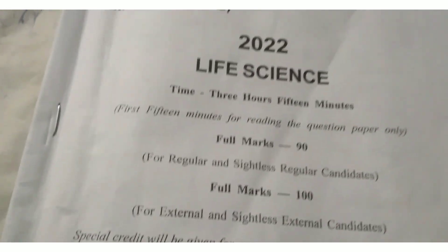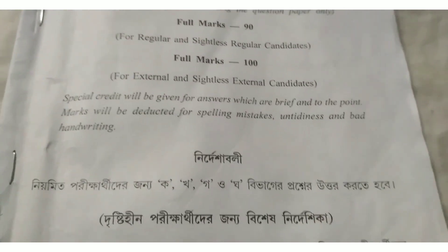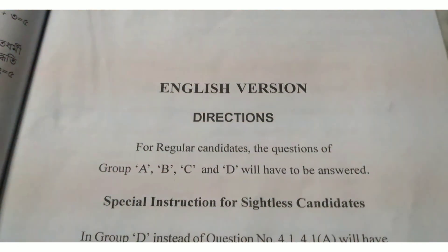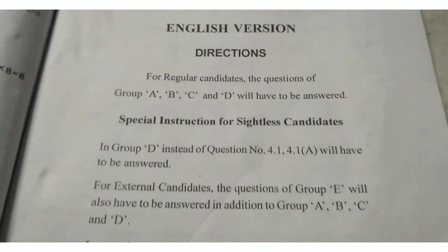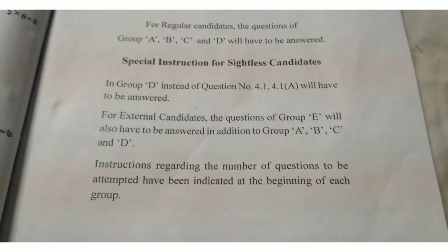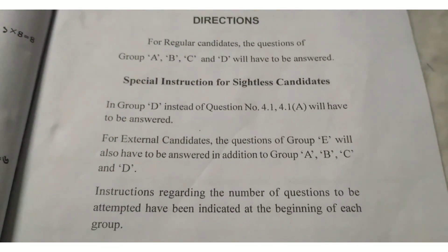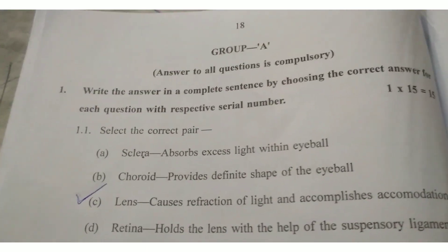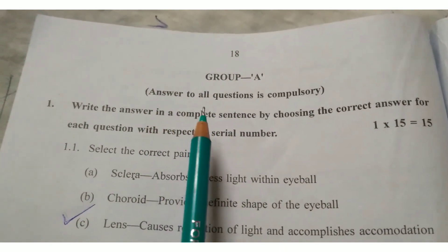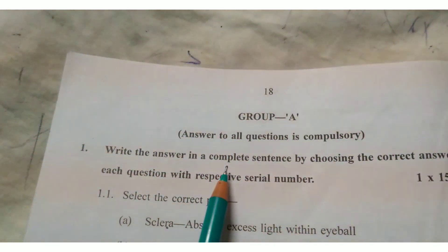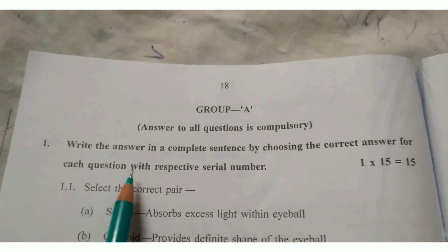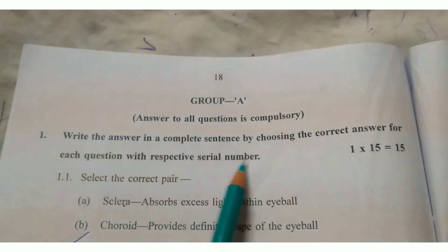So here is the first page. Read properly the directions and instructions. First, Group A — answer to all questions is compulsory. Write the answer in a complete sentence by choosing the correct answer for each question with the respective serial number.